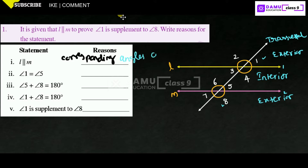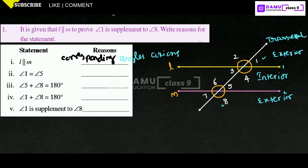By the corresponding angles axiom, angle 1 will be equal to angle 5. Angle 1 and angle 5 are corresponding angles on the same side of the transversal.